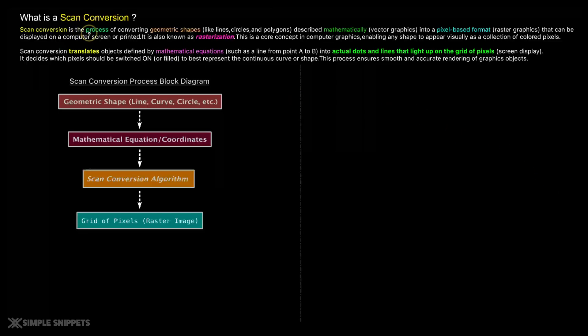scan conversion is the process of converting geometric shapes like lines, circles, polygons, triangles, rectangles which are generally described mathematically into a pixel based format also called as raster graphics that can be displayed on a computer screen. So this process is also called as rasterization,